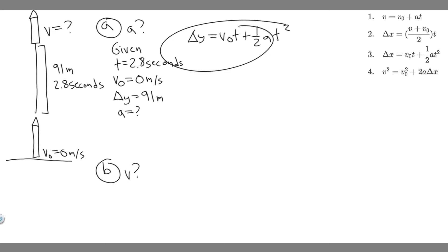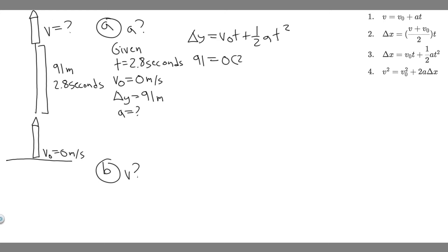Plugging in the numbers: 91 equals v₀ (which is 0) times t (which is 2.8). Zero times 2.8 is zero, so we can get rid of that. It's just one half times a, multiplied by t squared — so 2.8 squared. Now multiply both sides by two to get rid of the one half. Two times 91 is 182, so this becomes 182 equals 2.8 squared times a.